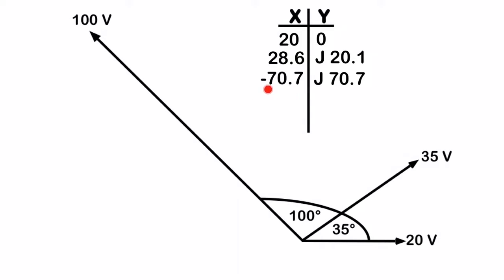Except it's negative 70.7 here, because we can see that if I drew this into a quadrant system, this vector here is in my second quadrant, so it would be a negative X and a positive Y.